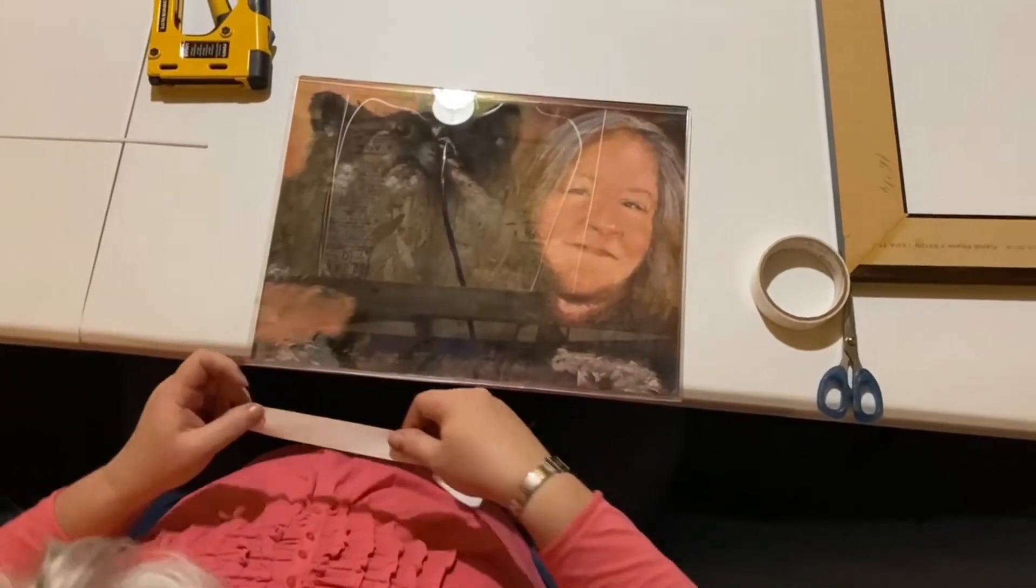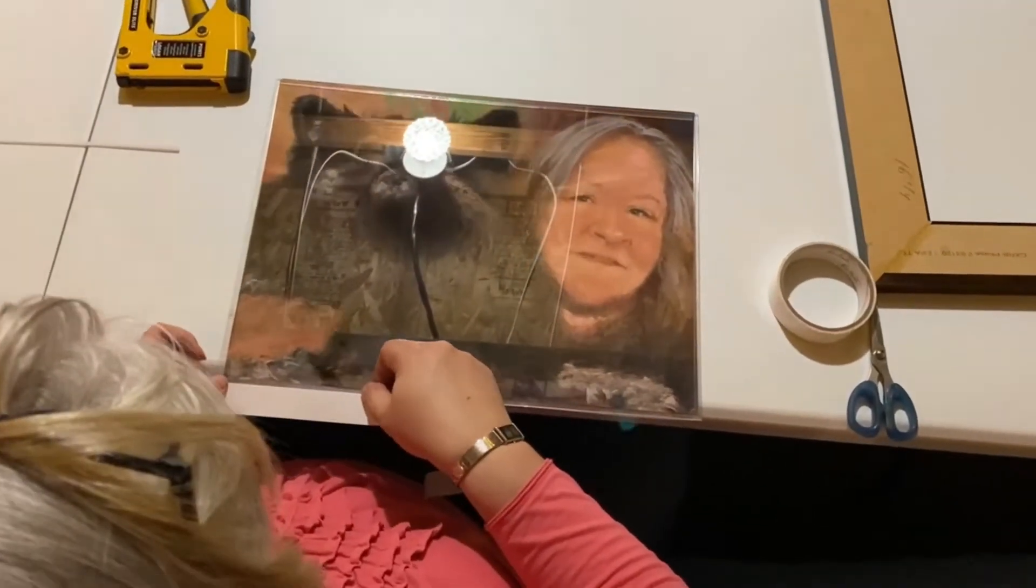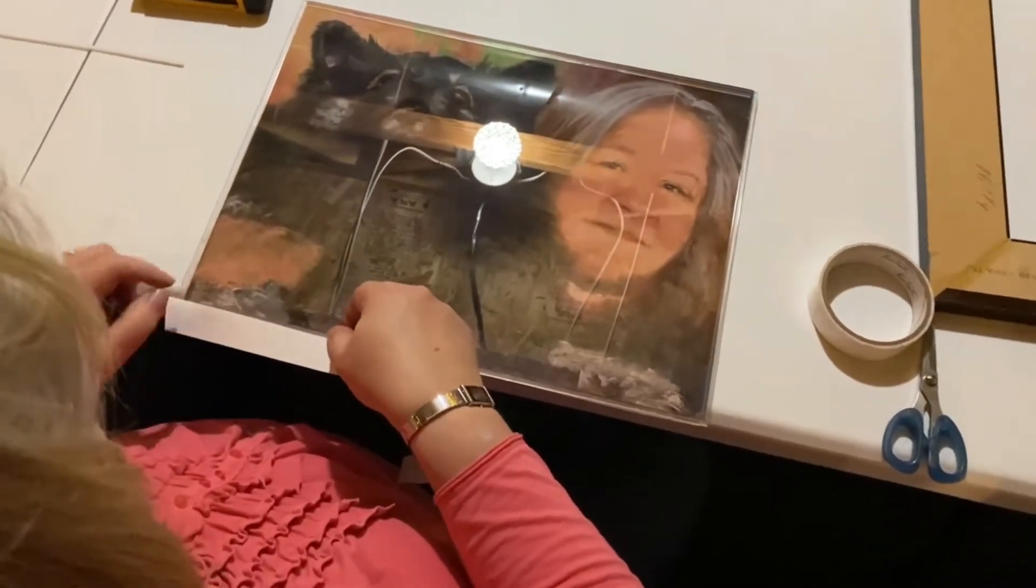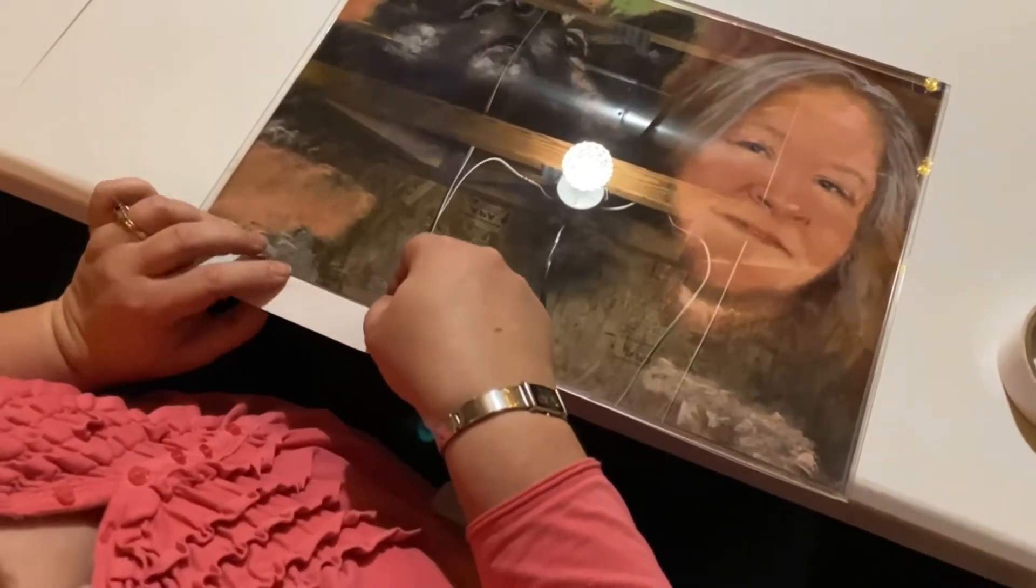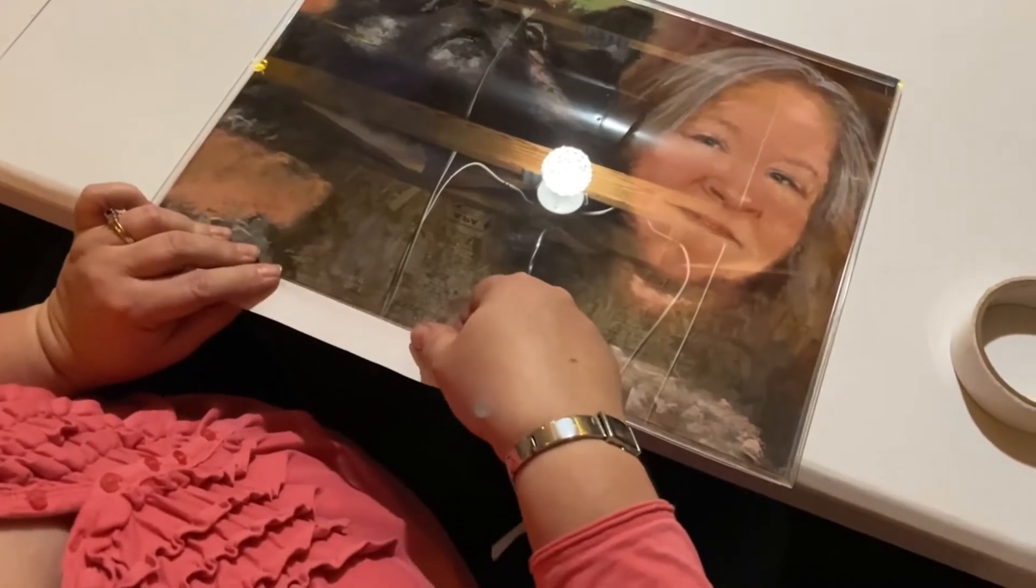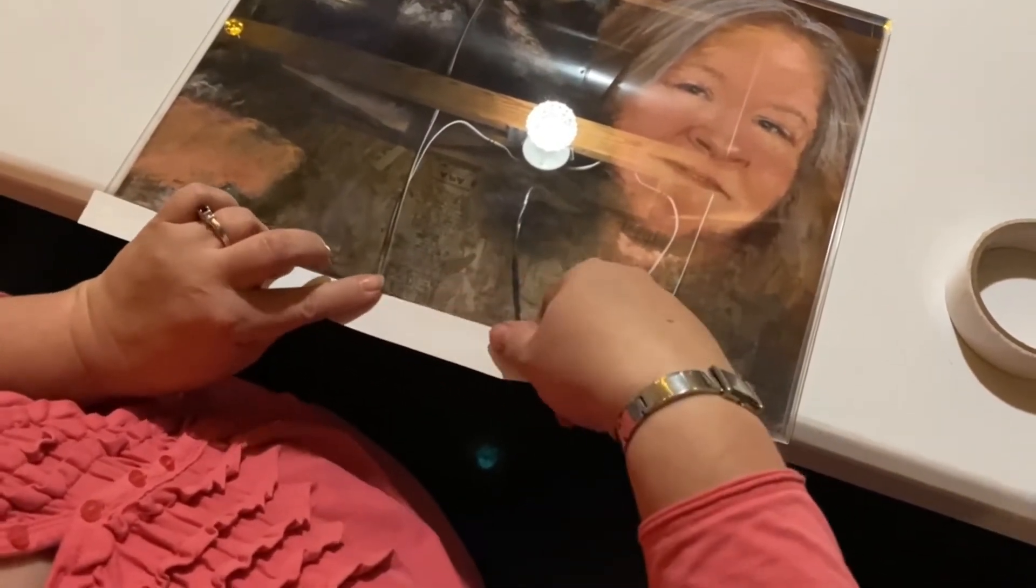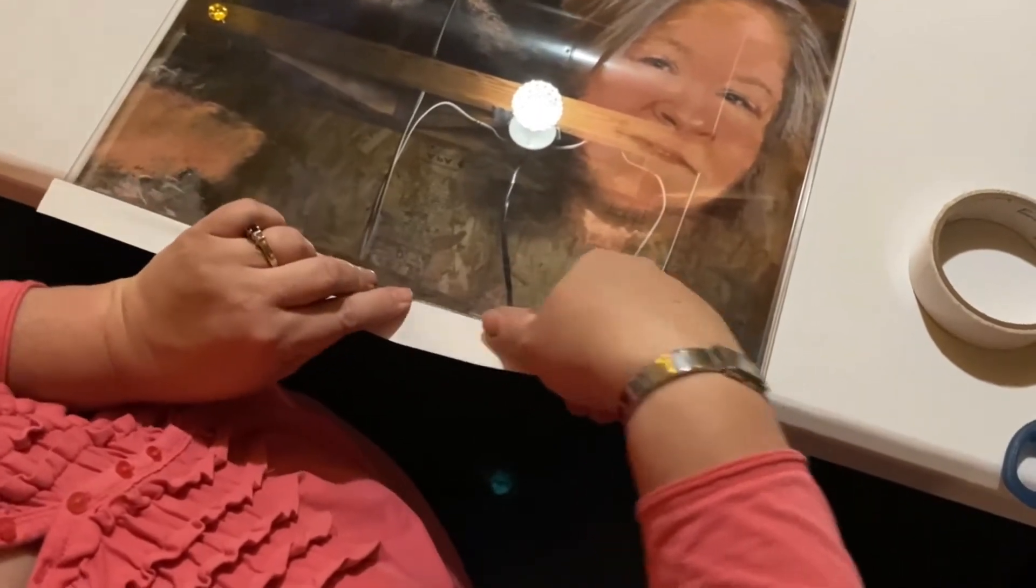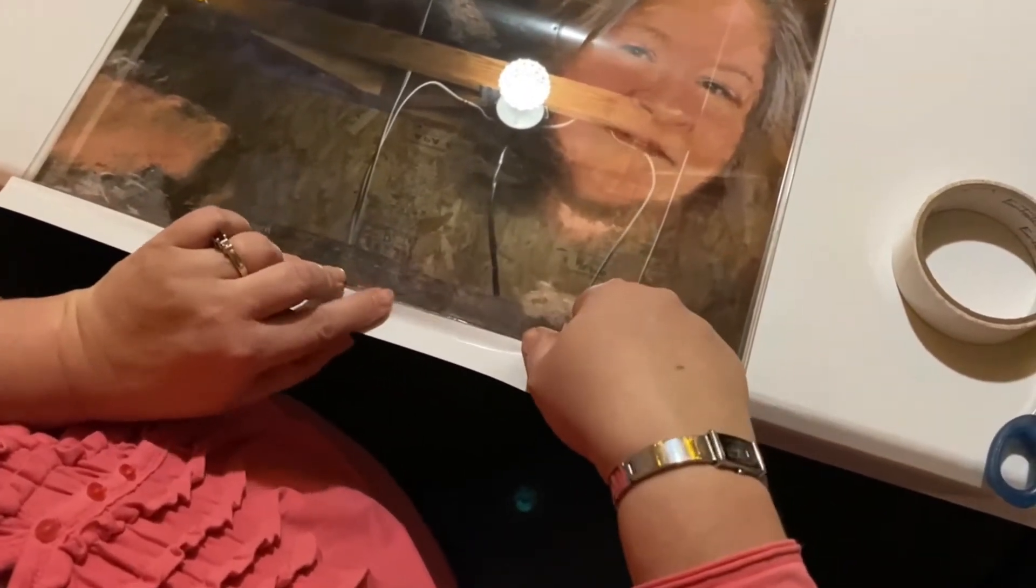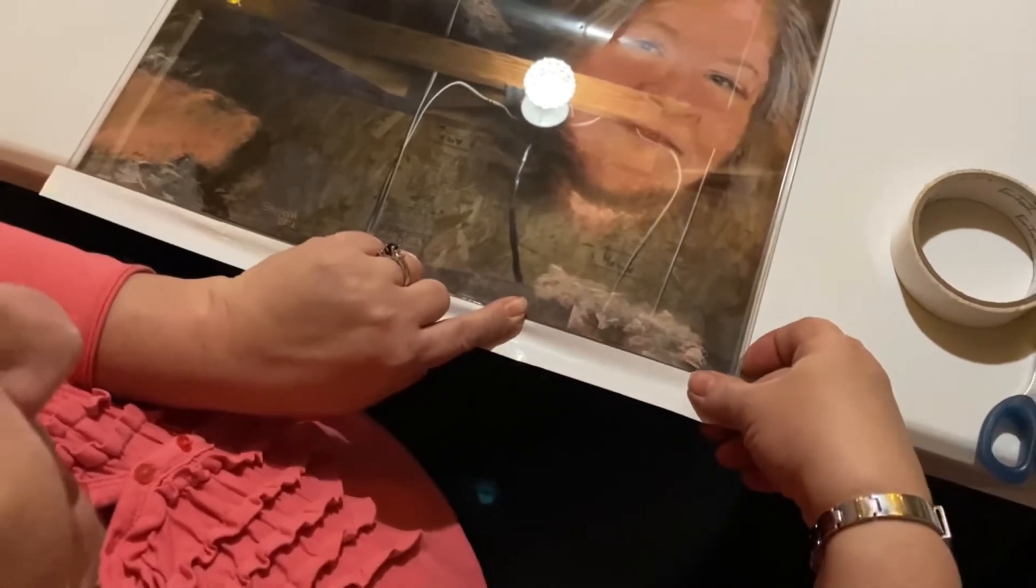Now I'm going to take this framing tape and put it right on the very edge. I'm seeing where that spacer is and trying to line this tape up about in the middle of the depth of that spacer. This is important because we don't want this tape to show from the frame.